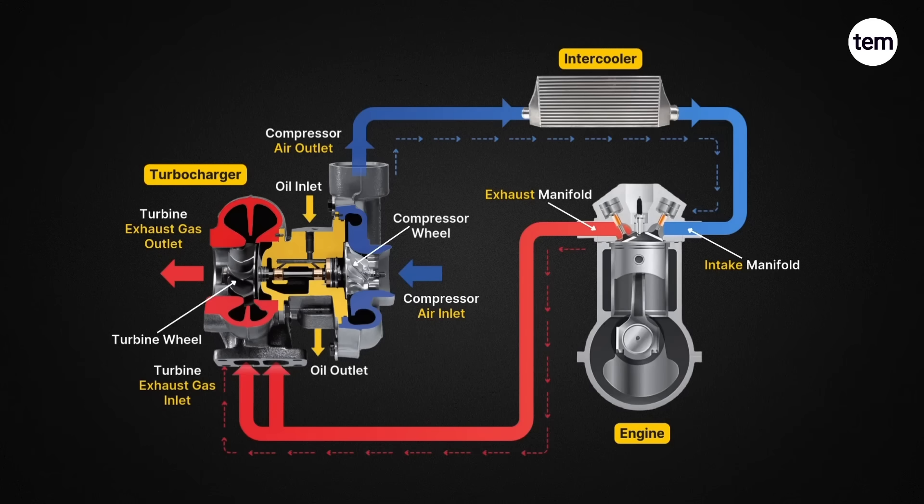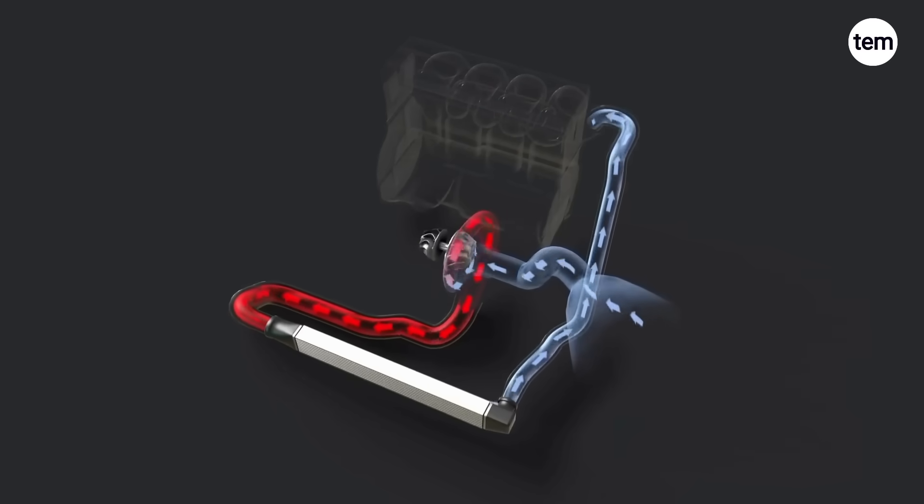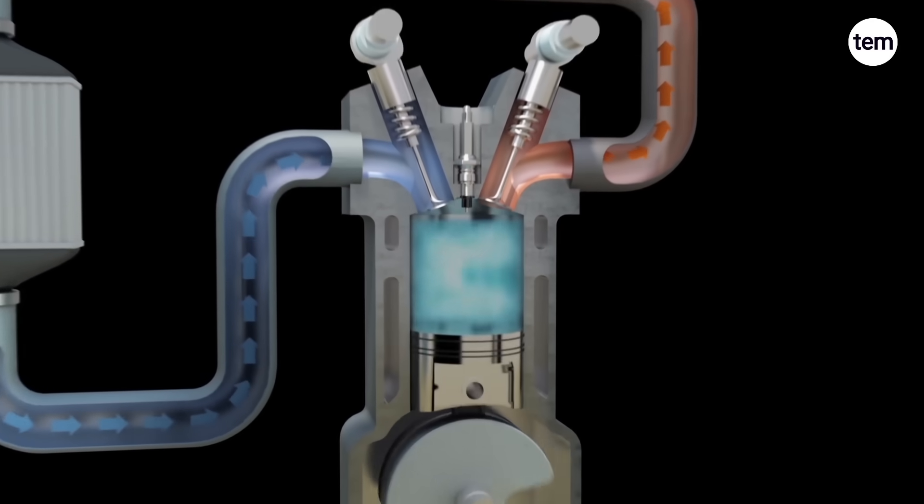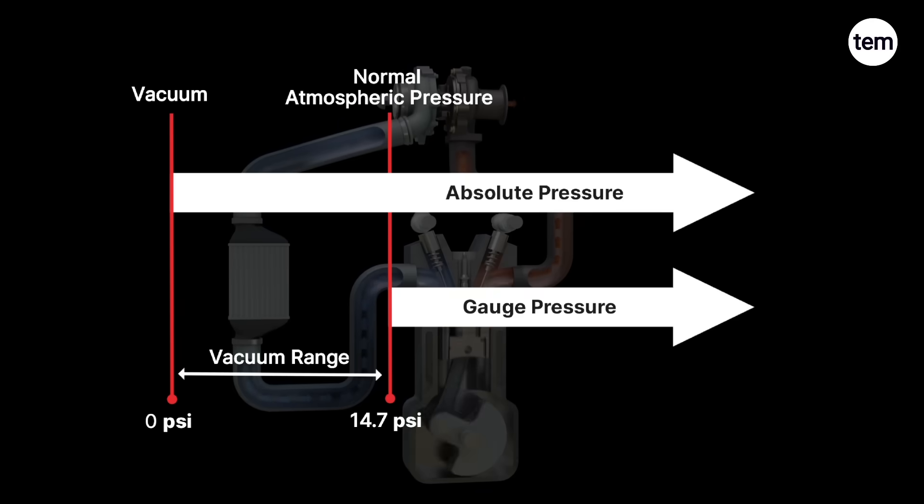An intercooler is usually installed between the turbocharger's compressor and the engine's intake manifold to cool down the temperature of the compressed air and increase its density. More dense air means more oxygen, which allows the engine to burn more fuel and produce more power at normal atmospheric pressure.